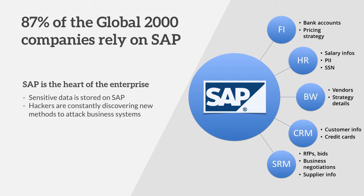Top companies rely on SAP, so it's important to protect these systems. Most critical business data, such as customer data, payroll information, suppliers, bidding, and critical financial information, is all stored in SAP. And hackers are constantly discovering new methods of intrusion, especially insiders. They're a big threat to large organizations.